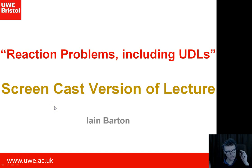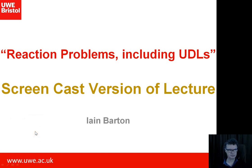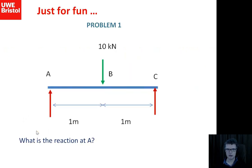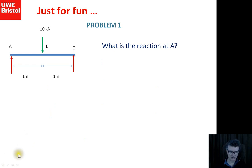This is lecture two. The main part involved working through questions, and then UDLs were introduced at the end. You can stop the videos when we come to particular problems and have a go at them. The first problem was just for fun — you can use symmetry to find the reaction at A, which is going to be five kilonewtons. Now I'll solve it formally.